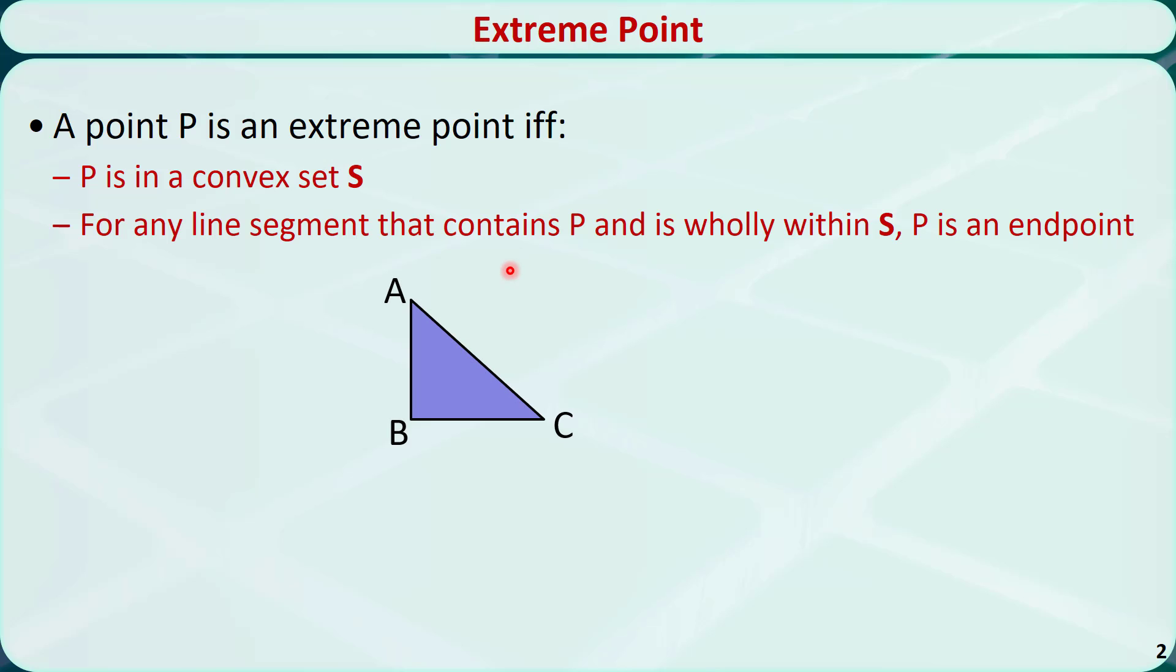In this figure, S is a triangle and it is a convex set. Points A, B, and C are extreme points. For example, when we draw a line segment between point A and any point in the set S, A is always an endpoint.